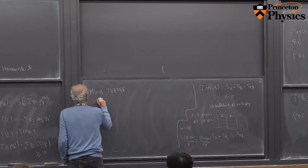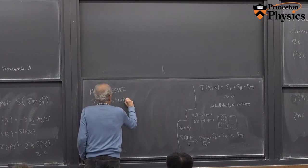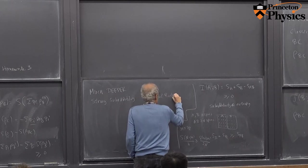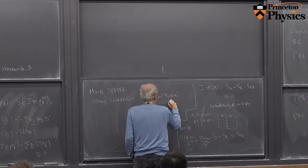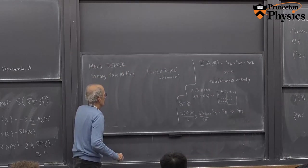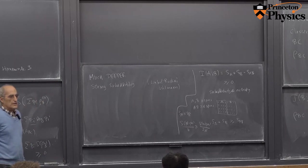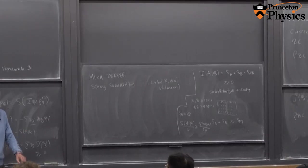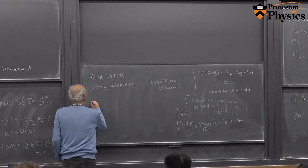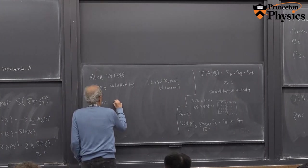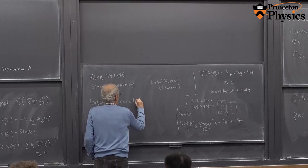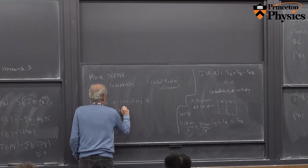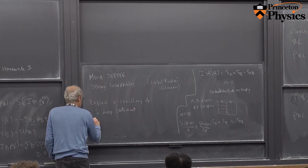There's a much deeper property called strong sub-additivity, first proved about a half century ago by Lieb and Ruskai, also generalized by Ullman. It's extremely important in many applications. I'll give an explanation of why it's true later, after we've done some more quantum field theory. For today, I'll only explain that it's a corollary of another deep statement called monotonicity of relative entropy.